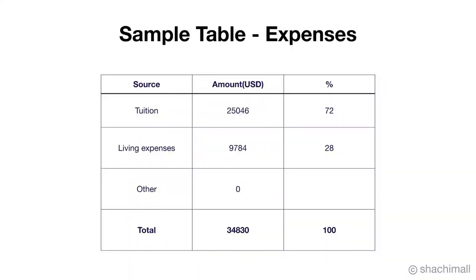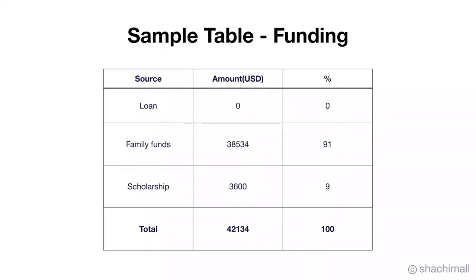A good way to prepare is to make two tables. The first table should list all your expenses in USD and INR, and also include the percentage breakdown, because visa officers can ask things like what percentage of your total expense is your living expense. Similarly, prepare a funding table listing all your sources — sanctioned loans, FDs, other savings — again with amounts in USD and INR and the percentage breakdown. Keeping these two tables ready will help you handle any number-related questions in the interview.